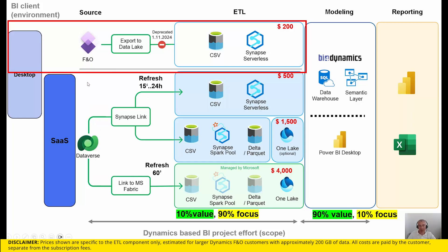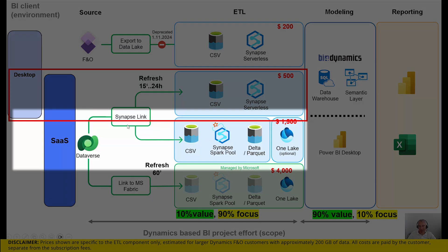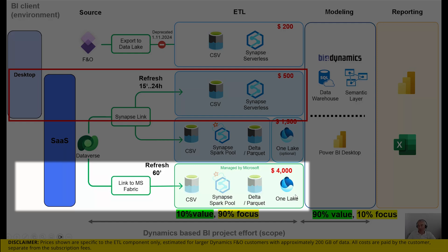This is the suggested way to go from Export to Data Lake to Synapse Link. There will be additional cost of export because the refresh can be set up from 15 minutes to 24 hours. But I believe it will not be material for most customers. More cost is going to happen if the CSV files provided with Synapse Link are further transformed with a SparkPool engine, so that you get a SQL endpoint supported with a delta-parquet format file. The third option is Link to Fabric, where the tables are also exposed to One Lake.